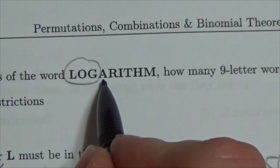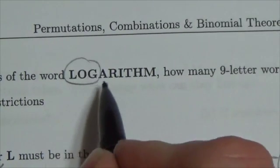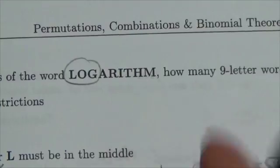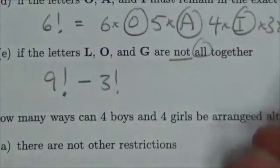And then there's the A, R, I, T, H, M. So, this is one, two, three, four, five, six, seven objects that we're permuting.